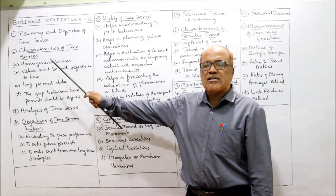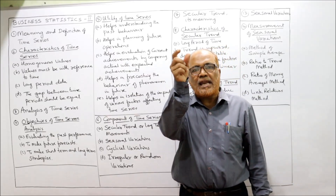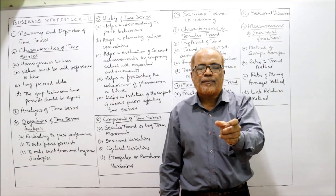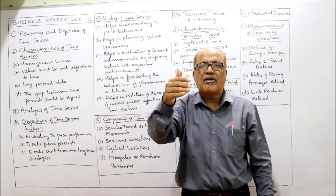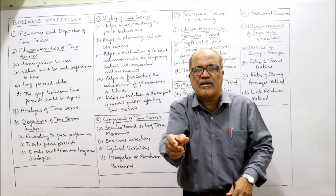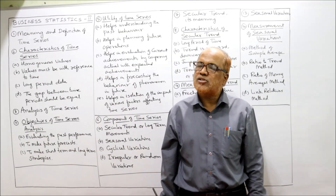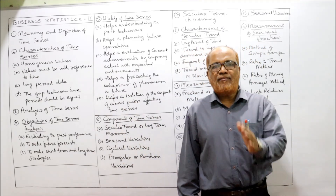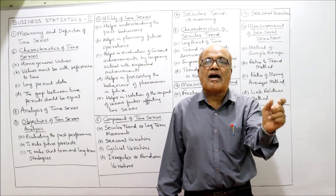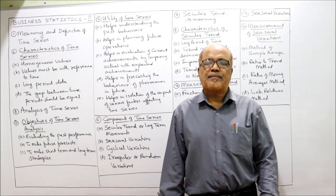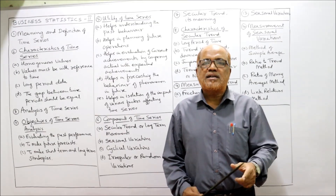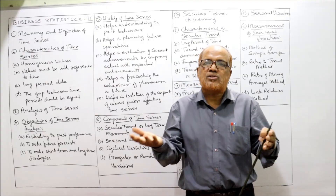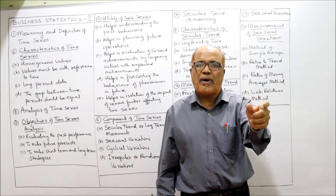Now, the characteristics of time series. First, homogeneous values — when arranging variables, the variables should be the same; we should not mix them up. If in 10 years, one year we record sales, the next year profit, and another year production, that is not time series. Second, values must be with reference to time — the time period may be a year, month, week, or day. It is not necessary that time always means a year; daily or monthly data also qualifies as time series.